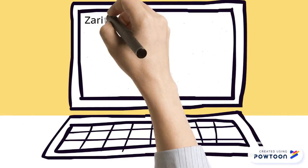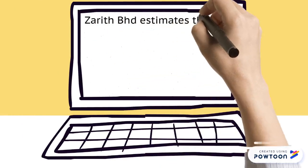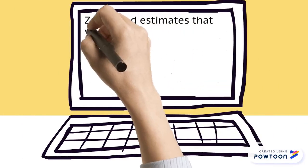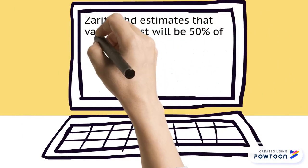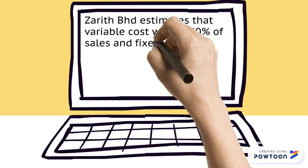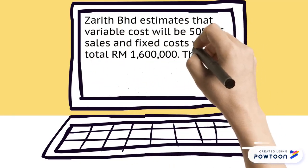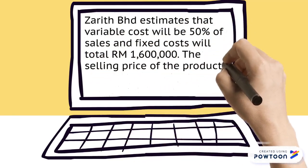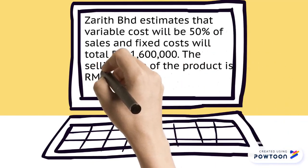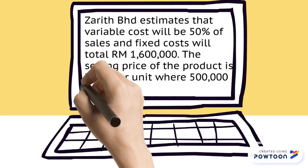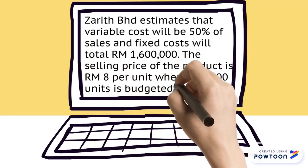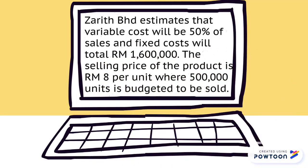The question is: Zareed Berhad estimates that variable cost will be 50% of sales and fixed cost will total RM1,600,000. The selling price of the product is RM8 per unit, where 500,000 units is budgeted to be sold.